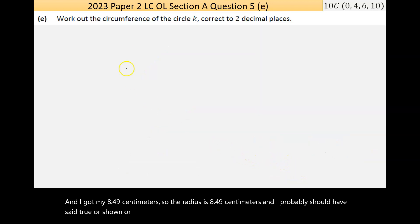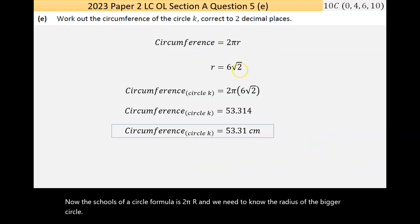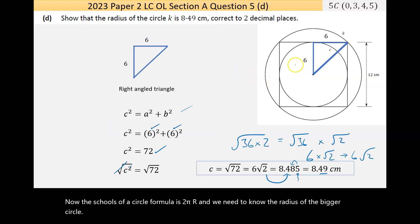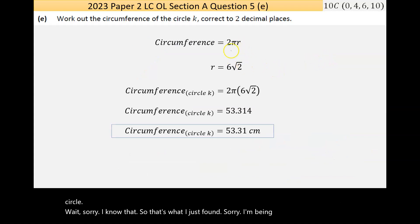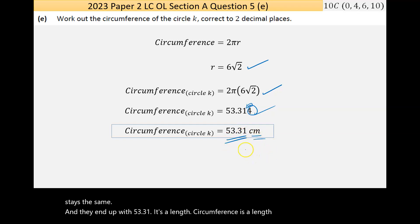Now the last step here is show or work out the circumference of the circle K. Now the circumference of a circle formula is 2πr and we need to know the radius of the bigger circle. Sorry, I know that—so that's what I've just found, sorry I'm being stupid. So the radius of the bigger circle is the 6√2 and I'm not going to use the decimal version because it would be a bit more inaccurate, although it doesn't really matter. So the circumference is 2 times π times 6√2, and I can throw that in the calculator, it'll handle it. I get a decimal answer of 53.314, so the 4 is what matters. It's less than 5 so the next number stays the same and I end up with 53.31. It's a length, circumference is a length, so it's centimeters.